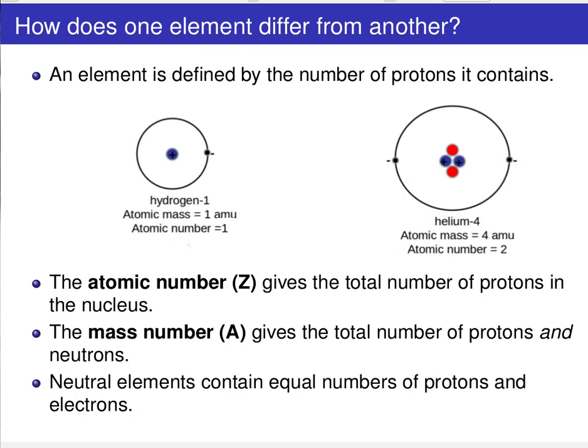So with that review of the basic building blocks of an atom, we're now ready to answer a very important question, namely, how does one element differ from another? So it turns out that a given element is defined by the number of protons that it contains. So if you look at hydrogen, hydrogen has a single proton right here in the middle, a mass number, therefore, of 1 AMU. And if you compare that to, for example, helium, the second simplest element,